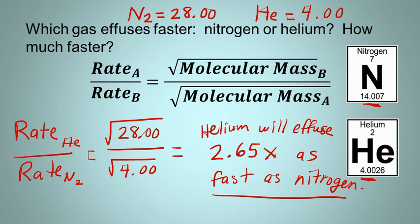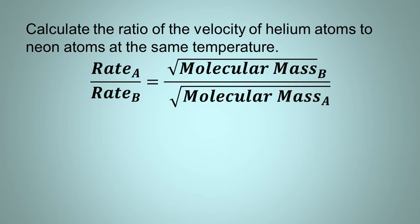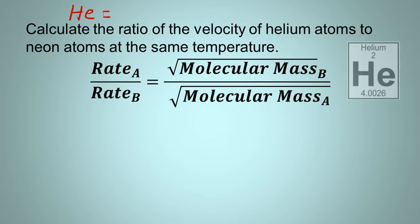Let's try another example. This time it's worded a little bit differently, but the basic idea here is the same. Calculate the ratio of the velocity of helium atoms to neon atoms at the same temperature. So we have Graham's Law of Effusion. This time we have helium and neon. So helium, if we look at the periodic table, has an atomic mass of 4.00. Same as it was a few minutes ago.